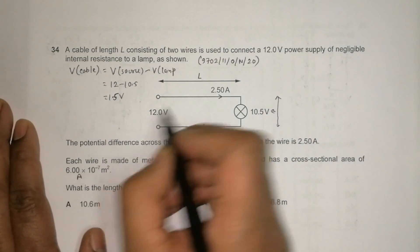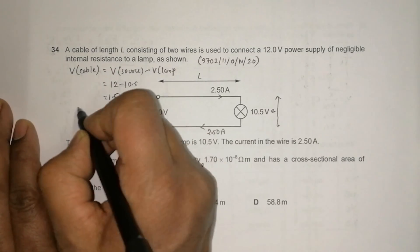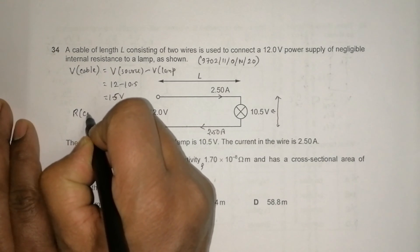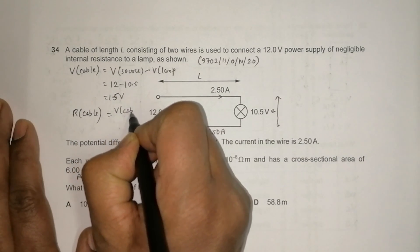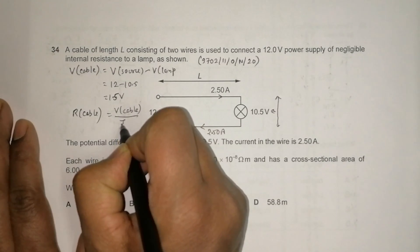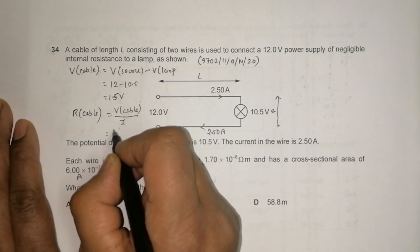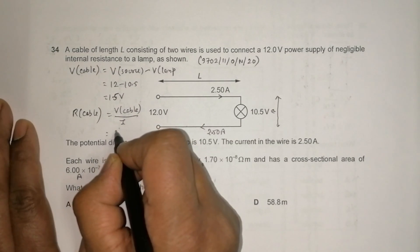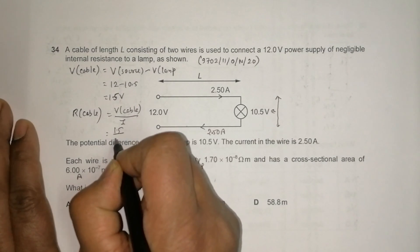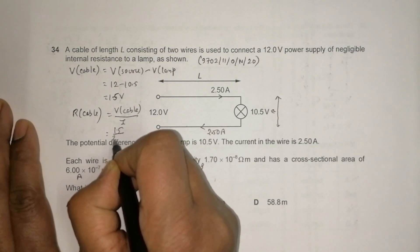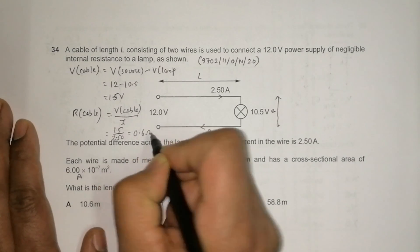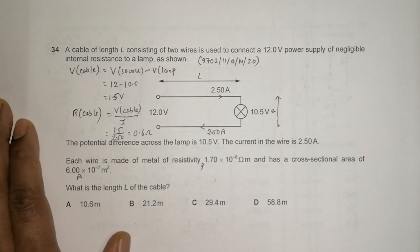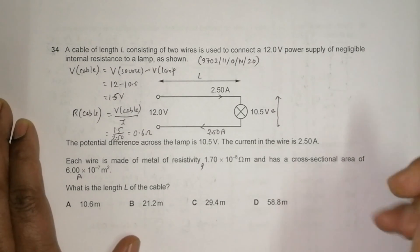Now that we have the potential drop across the cable, we can find the resistance of the cable. The resistance equals V_cable divided by the current, which is 1.5 divided by 2.50, equal to 0.6 ohms. So the resistance of the two wires combined is 0.6 ohms.